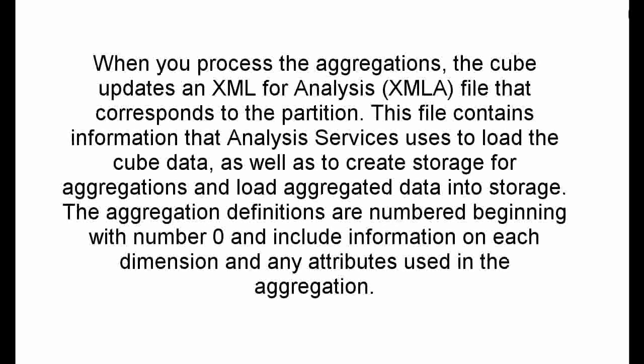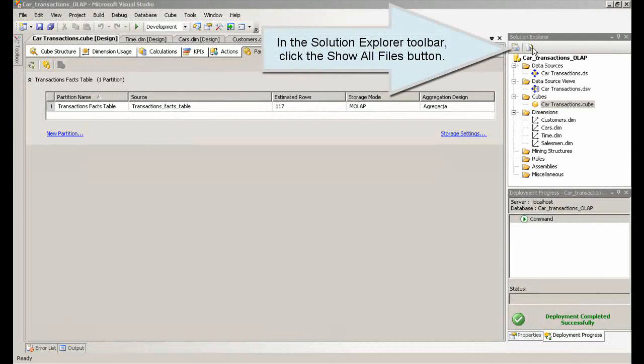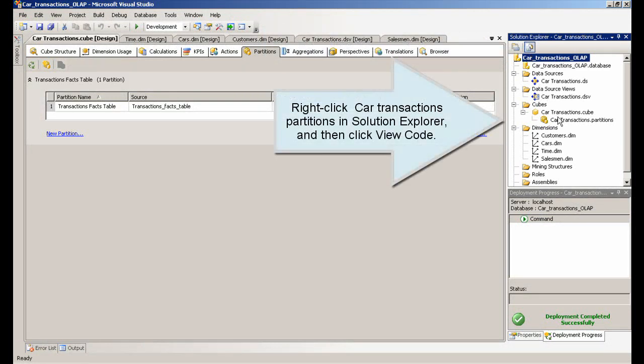Part 2: Inspecting Aggregations. When you process the aggregations, the cube updates an XML for Analysis file that corresponds to the partition. This file contains information that Analysis Services uses to load the cube data, as well as to create storage for aggregations and load aggregated data into storage. The aggregation definitions are numbered beginning with number 0 and include information on each dimension and any attributes used in the aggregation.